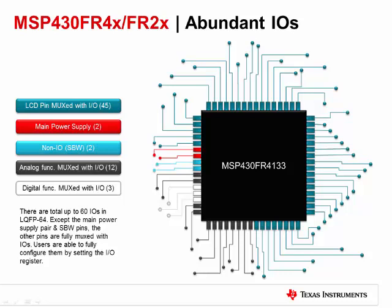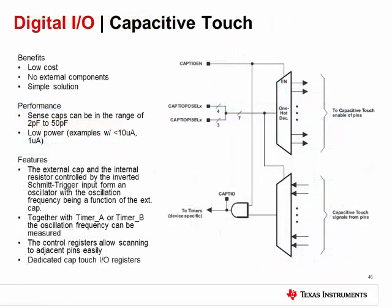Finally, let's look at the I/O. Very few other devices with a similar memory footprint offer the I/O functionality of the FR4X and FR2X devices. Up to 60 GPIOs are available on the 64-pin package device, all fully muxed with different functions including LCD, ADC, and more. The only pins that are dedicated are supply pins and spy-by-wire. All of the I/O pins are capacitive touch enabled. There is internal circuitry that will form an oscillator with the external capacitive pad, and this oscillation is fed back into the timer modules which can measure the frequency. The capacitive touch library and tools like TouchPro GUI are available to help make developing a touch application easier.